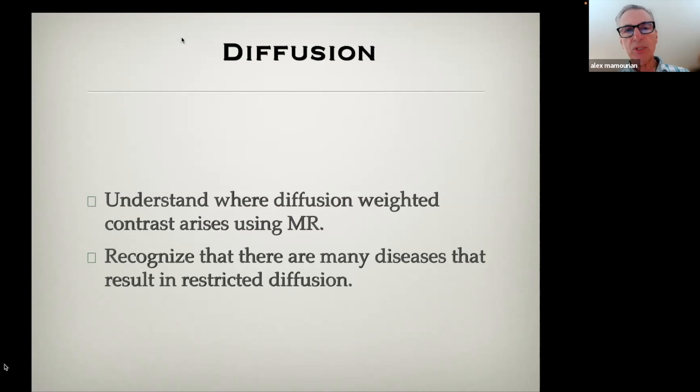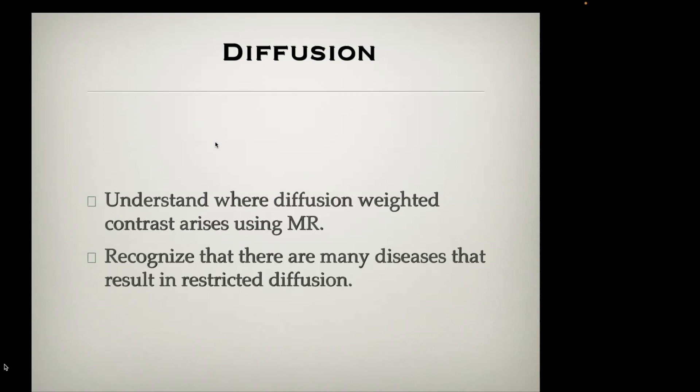The first talk is about MR physics, specifically diffusion imaging, because this is probably of greatest interest in the world of stroke imaging. What I want to review is where the contrast arises in diffusion-weighted imaging, and I want you to recognize that there are multiple diseases that can show high signal on diffusion-weighted imaging as well as restricted diffusion.